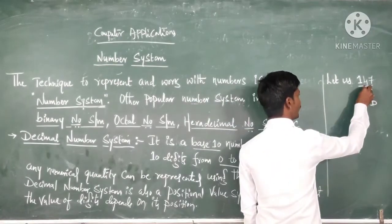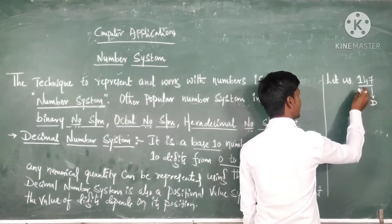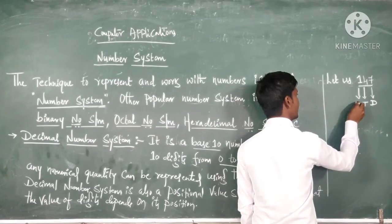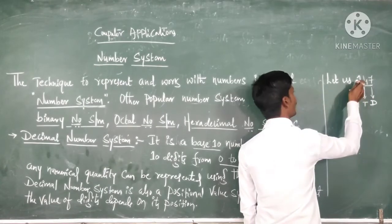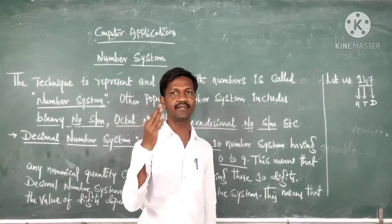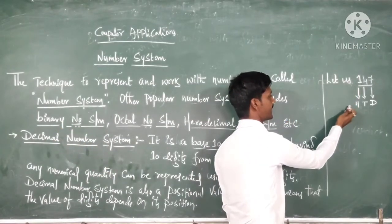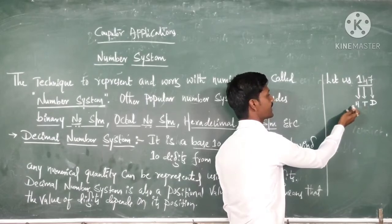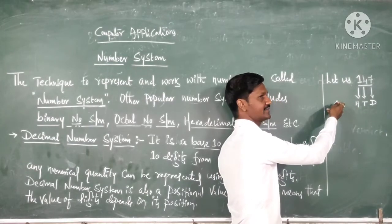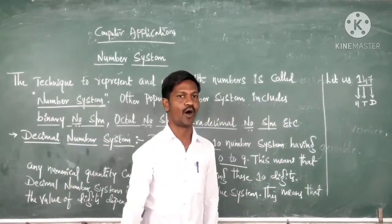This 4 is considered as tens, and this 1 is considered as hundreds. Suppose one more value is present on the left side — it will become thousand, ten thousand, lakh, ten lakh, and so on.